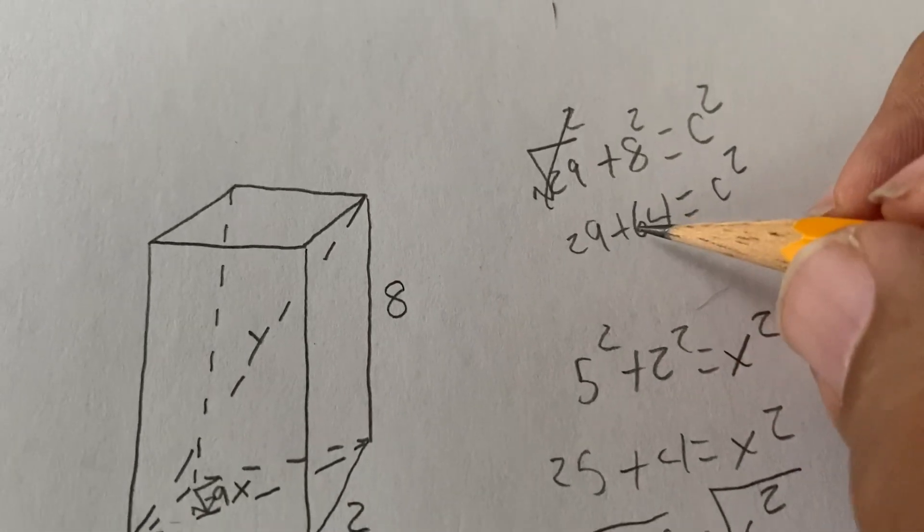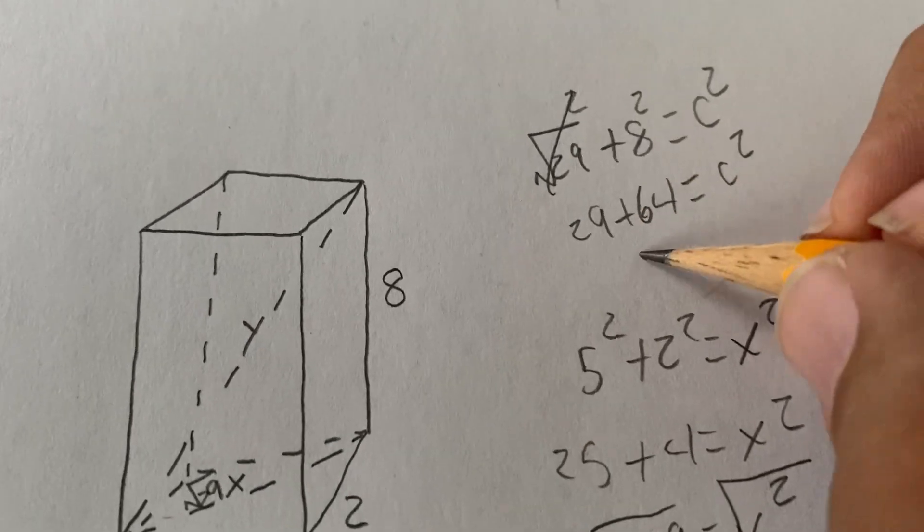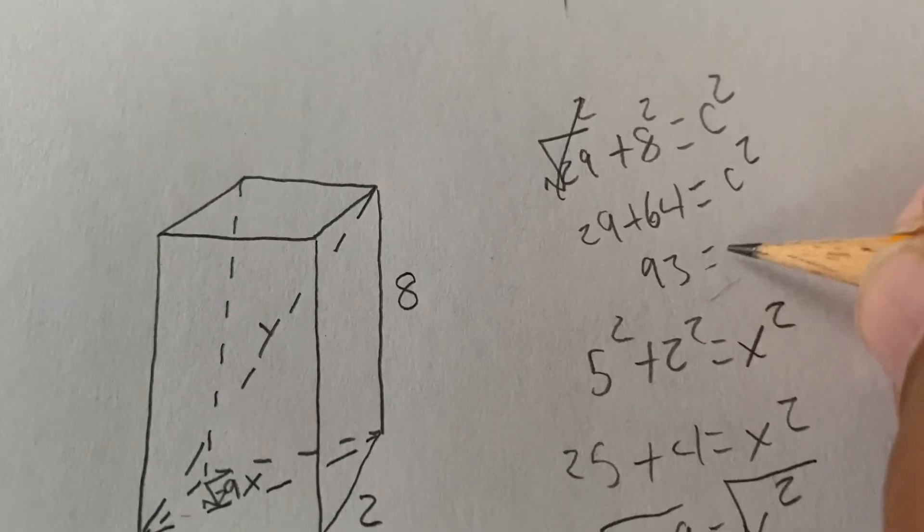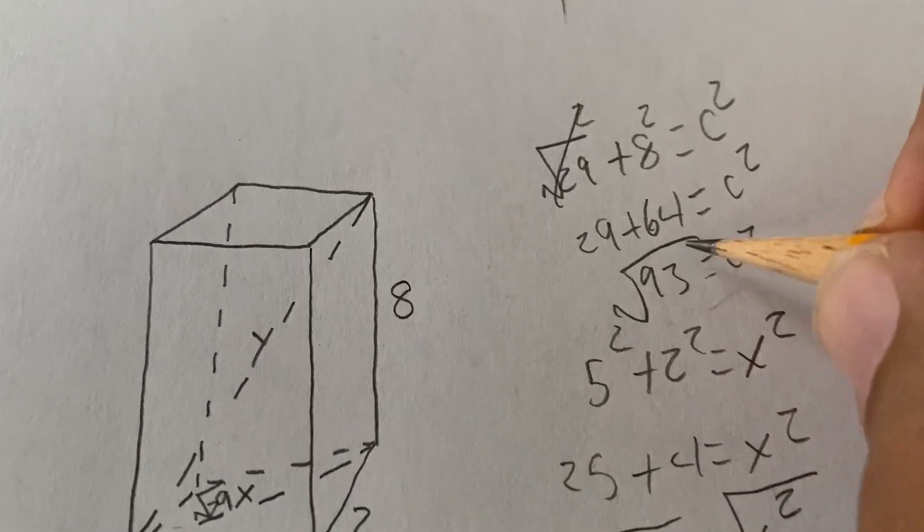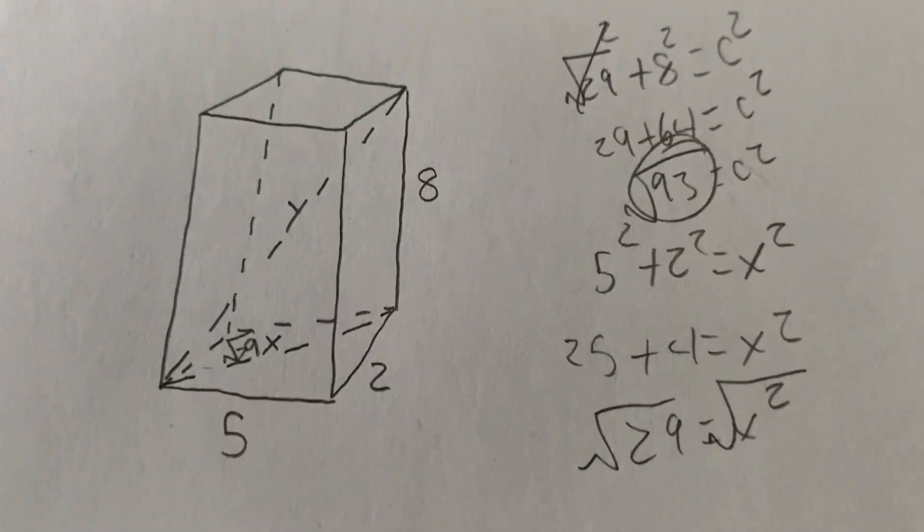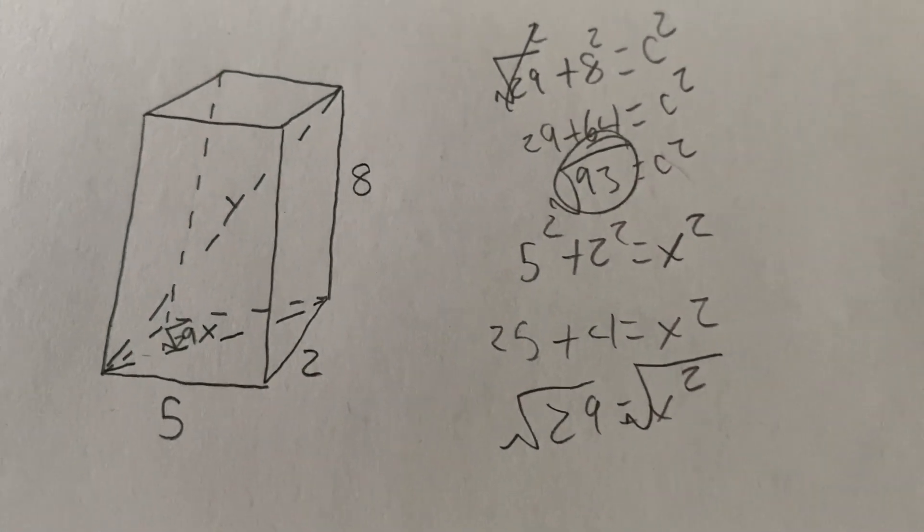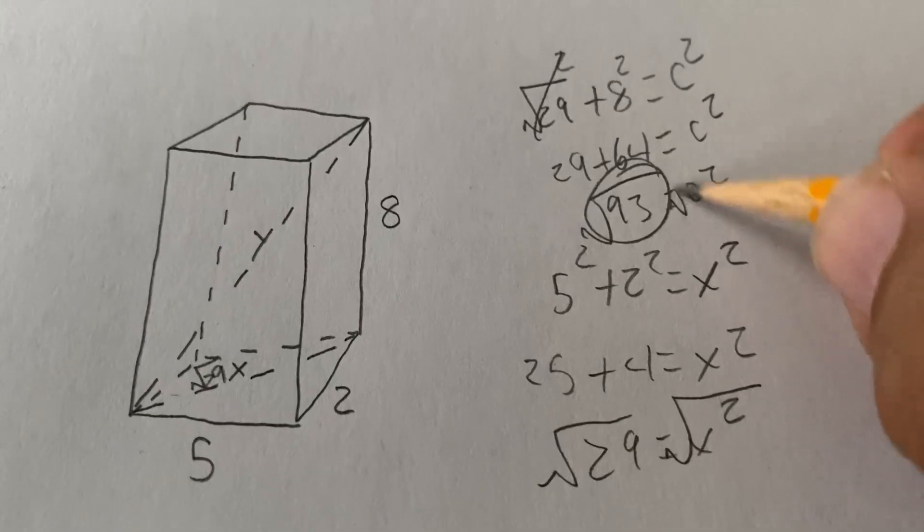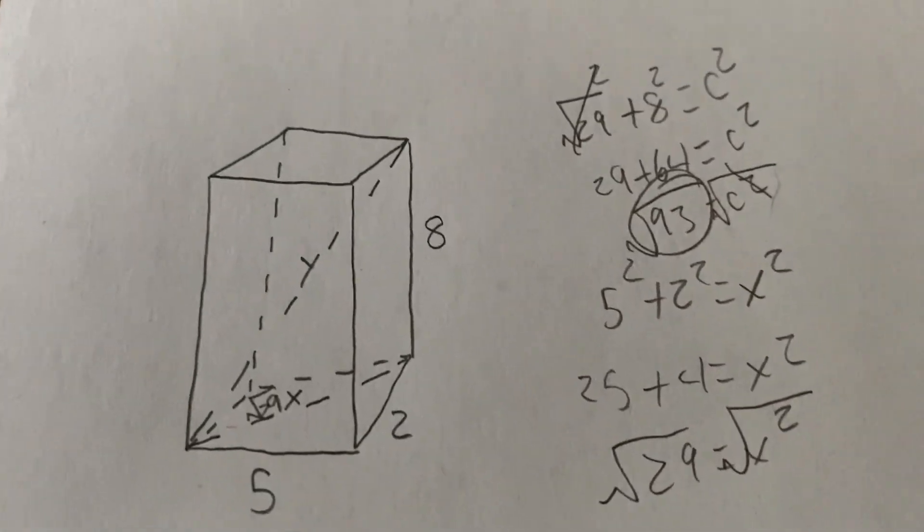So, we're going to add these. So, that's going to be 84, 93. So, 93 equals c squared square root y equals the square root of 93. I want you to square root this side again. And that's it.